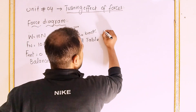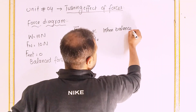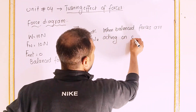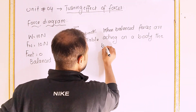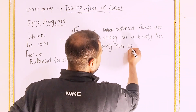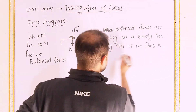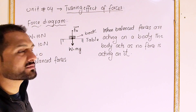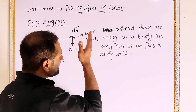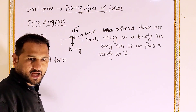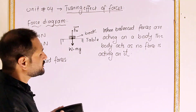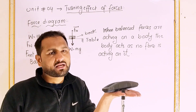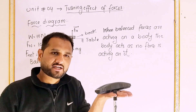When balanced forces are acting on a body, the body acts as if no force is acting on it. The body remains in its natural state. For example, a book resting on a table has balanced forces acting on it — the body remains at rest.